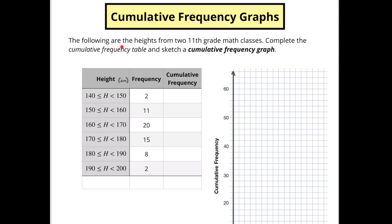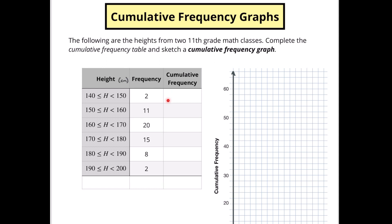Let's get to cumulative frequency graphs. The first thing you notice here is we've got the heights from two 11th grade math classes, and we're going to complete the cumulative frequency table and sketch the cumulative frequency graph. Cumulative frequency is just that — we're adding up the frequency of all our data. The cumulative values are: 2, then 2 plus 11 gives us 13, then adding 20 gives us 33, continuing to 48, 56, and 58. So we have 58 people in this data set.